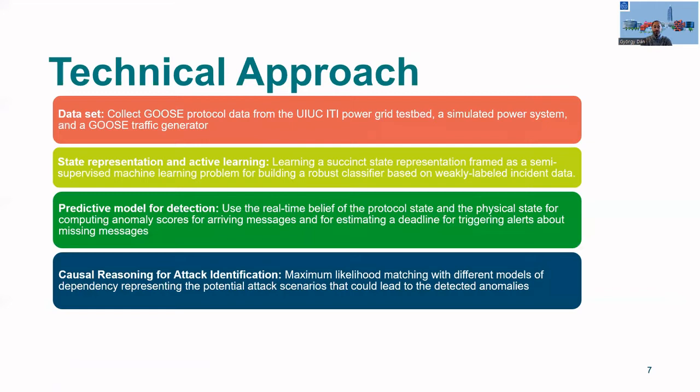Our approach to addressing these questions is relying on four pillars. First, we aim to collect a GOOSE protocol dataset from a power grid testbed located at the University of Illinois, Urbana-Champaign. We want to develop a state representation using machine learning together with active learning.